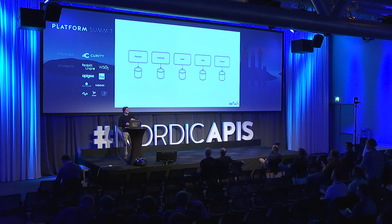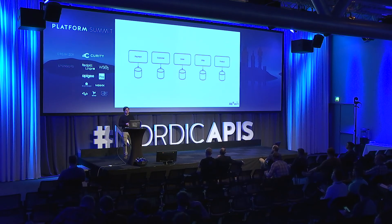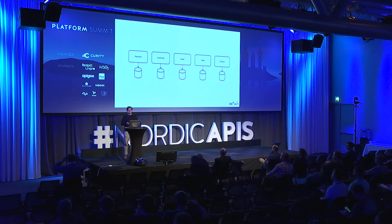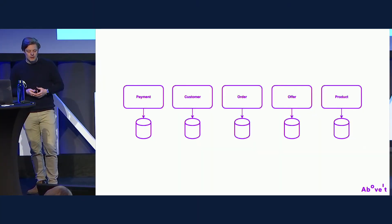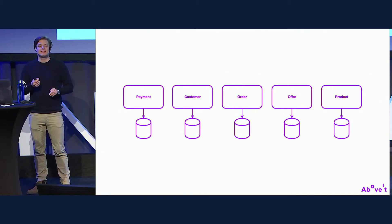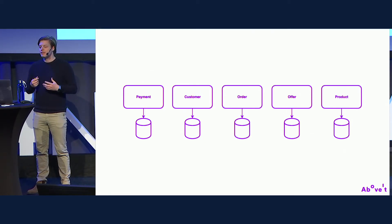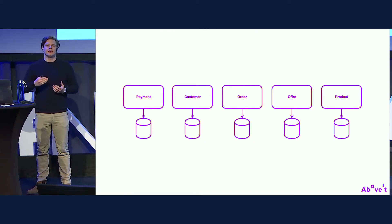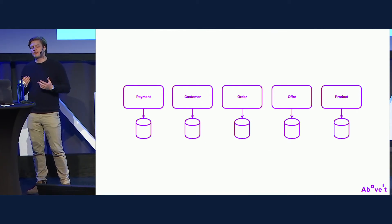Looking at some data modules: we have the payment module storing all payment and transaction information, the customer module storing all customer data, the order module storing all customer orders and order states, and the product module tracking all products and versions available for purchase. Each data module is the single source of truth — no data replication across modules. This is especially helpful for GDPR compliance, since deleting customer data is very easy when it's all in one module.